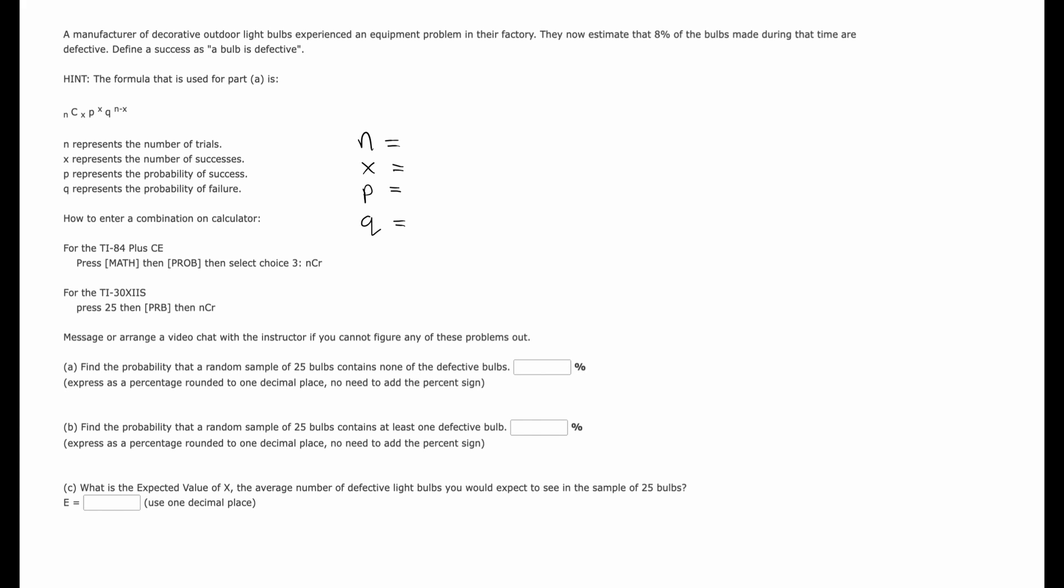So what is N here? That's the number of trials. They're looking at 25 total bulbs, so that represents 25 trials, 25 chances to find a defective one.